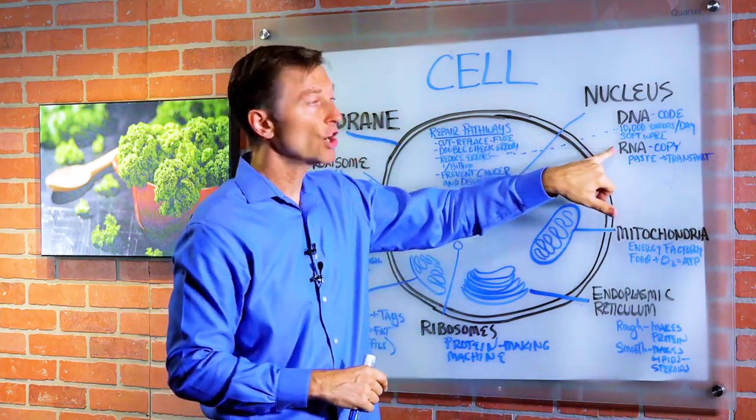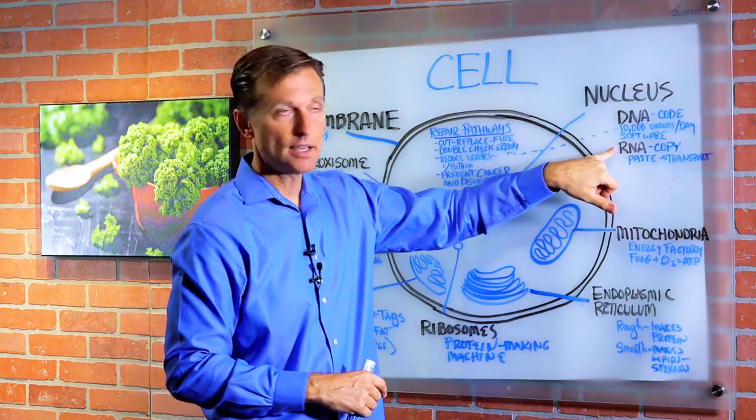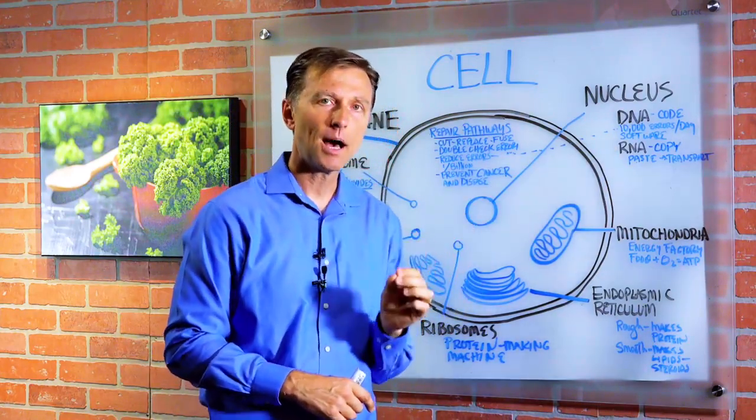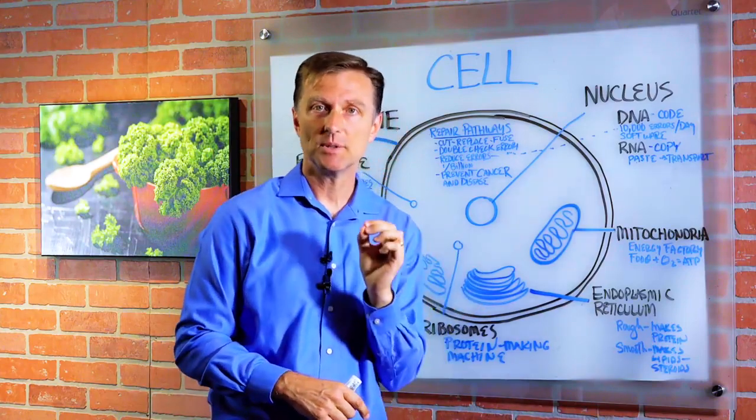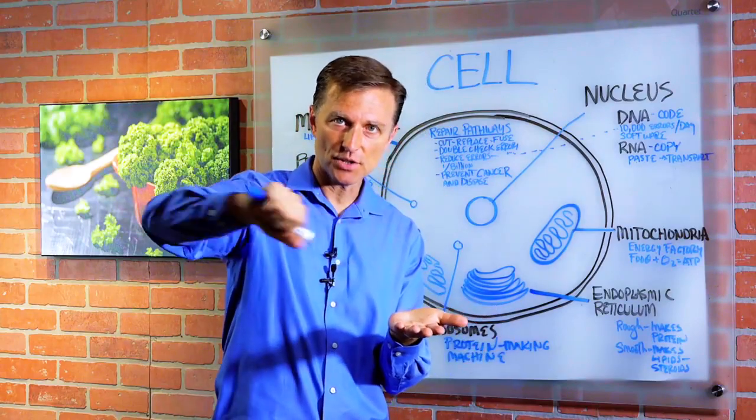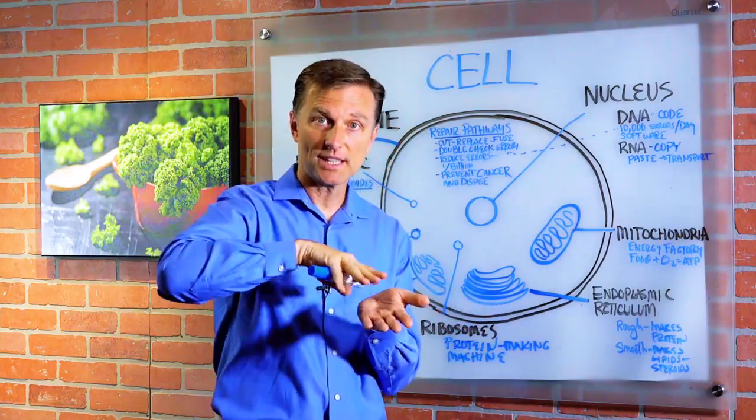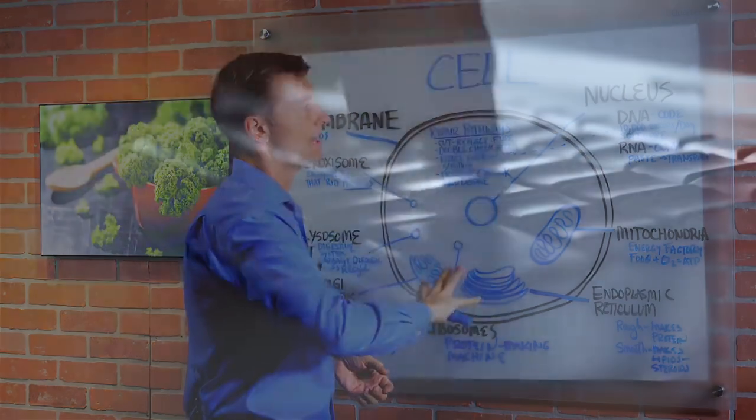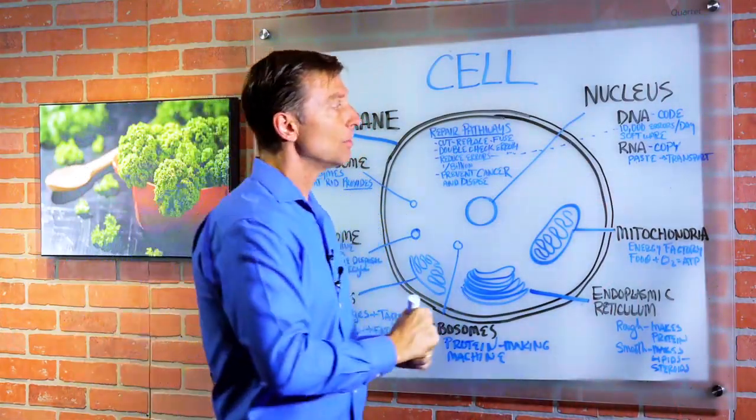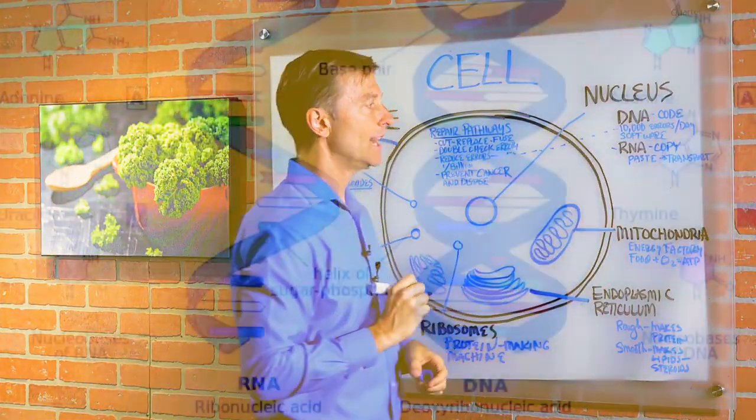Then we have what's called the RNA. Now there's three different kinds, but just to simplify it, you can look at the RNA as a copy of the DNA. You have a copy machine in your cells. So it makes a copy of the code and then it pastes it into certain transport units that send it out through the rest of the cell. So just like a computer programmer that would write his certain code and then maybe cut and paste it into a different thing to make a website, your body has the RNA to do that as well.